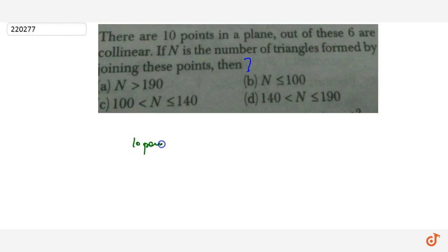We are given 10 points in a plane. How many possible triangles can be made? How many points should we take? 3.